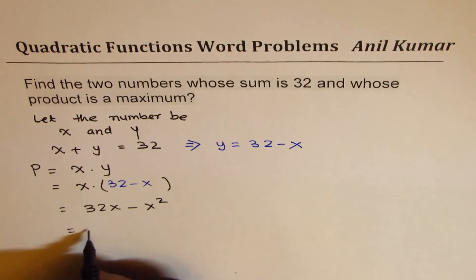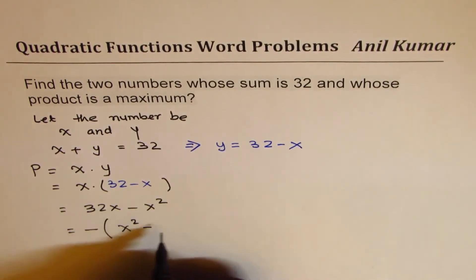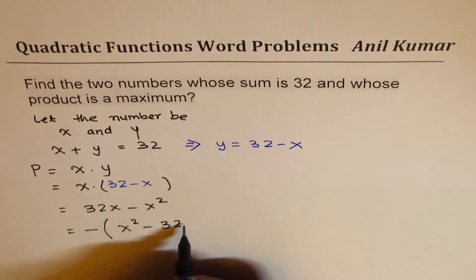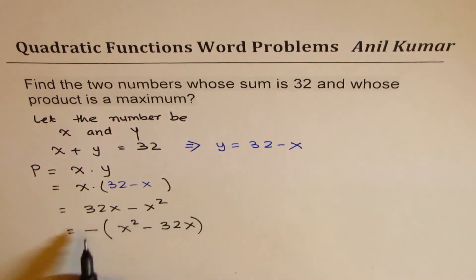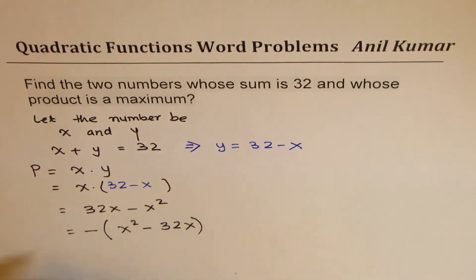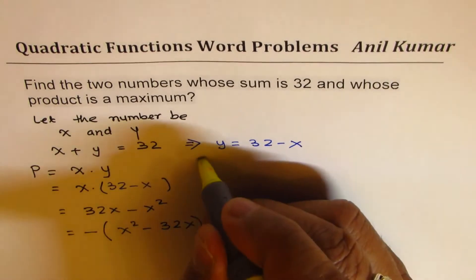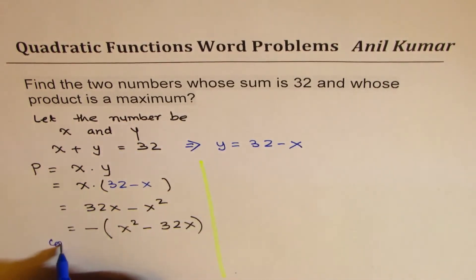Or write minus first, factor this out, you get x square minus 32x. I'm going for completing the squares and I'm not really factoring it. Now what is half of 32? Half of 32, so we'll do on this side. The next step is complete squares.